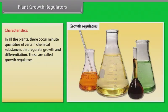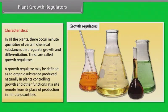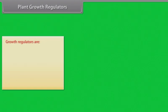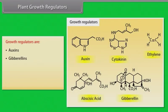Plant growth regulators. Characteristics. In all the plants, there occurs minute quantities of certain chemical substances that regulate growth and differentiation. These are called growth regulators. A growth regulator may be defined as an organic substance produced naturally in plants controlling growth and other functions at a site remote from its place of production in minute quantities. These are auxins, gibberellins, cytokinins, ethylene and abscisic acid.